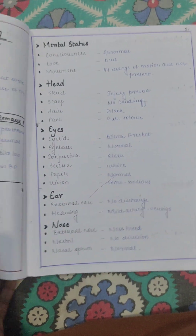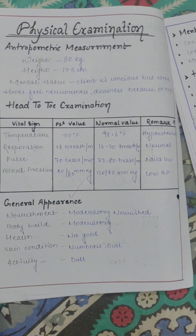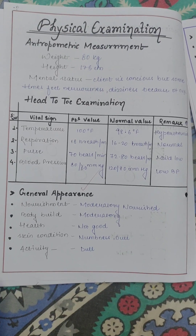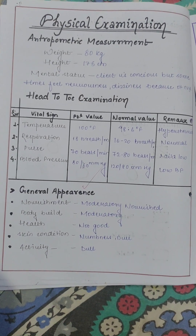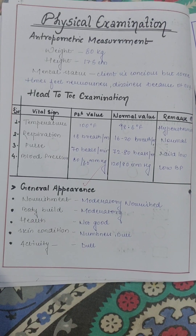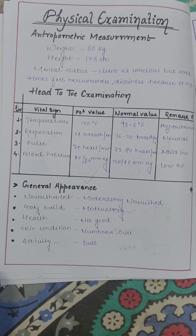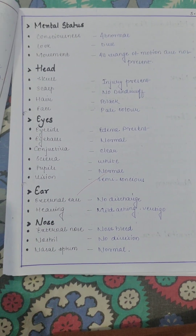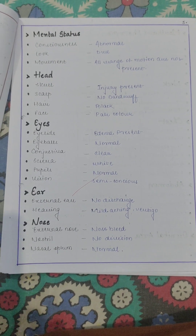After that, you have to do a physical examination, which is very important because it carries lots of marks — the parameter of physical examination is worth five marks. You have to do head examination, take all the vitals, and then do a head-to-toe examination.